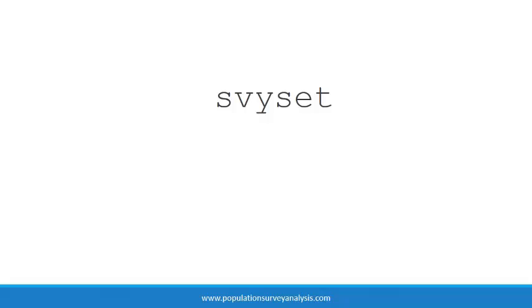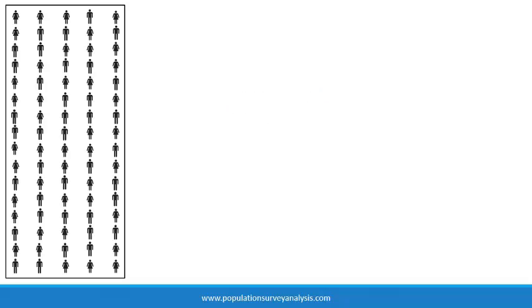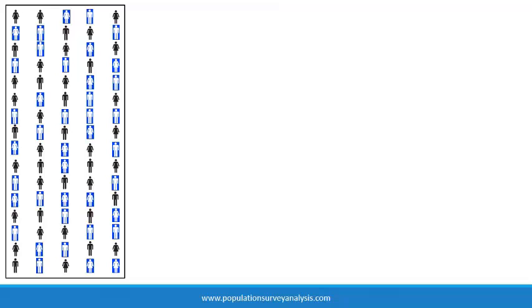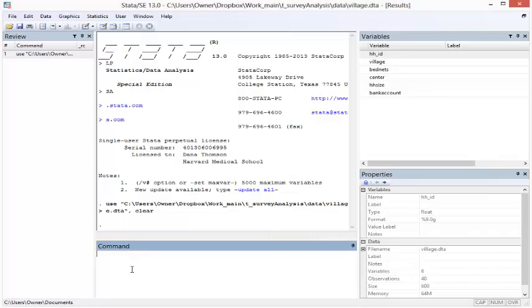Stata's survey set, or SVY set statement, allows us to define the survey design once and then call on that survey design anytime we produce an estimate or model from the data. Let us go back to the example of a village with 80 households. We want to estimate the percent of households with a bank account in that village. We randomly sample 40 households and administer a questionnaire to one adult in each household. In Stata, we first generate a value for the finite population correction factor, which is equal to the sampling fraction, little n over big N, or 40 sampled households divided by 80 total households.